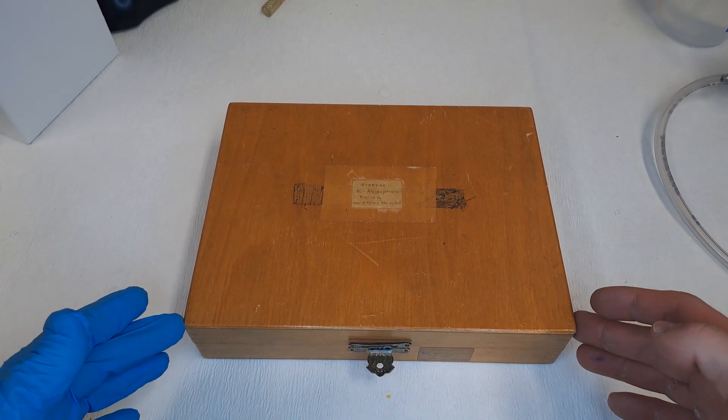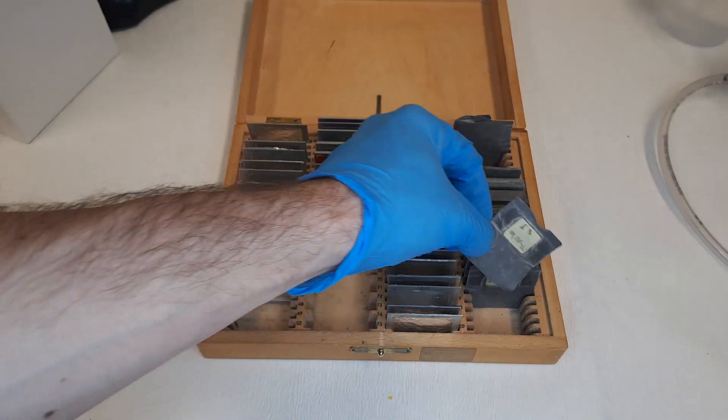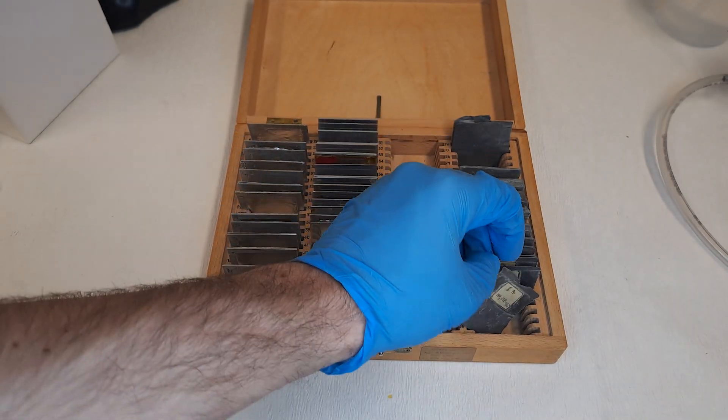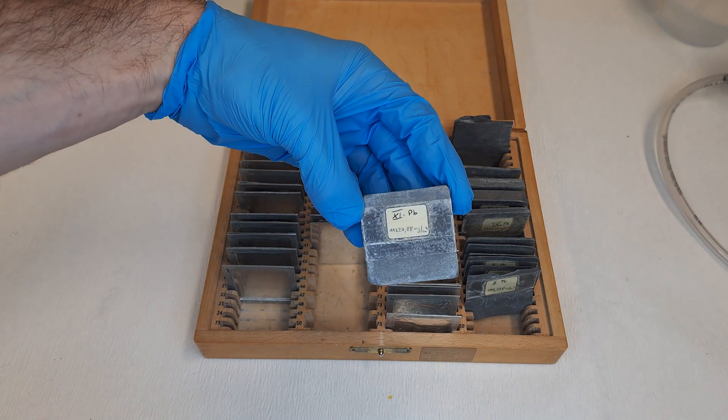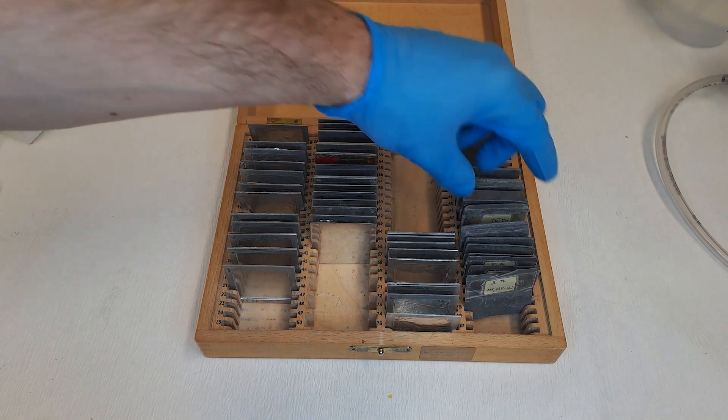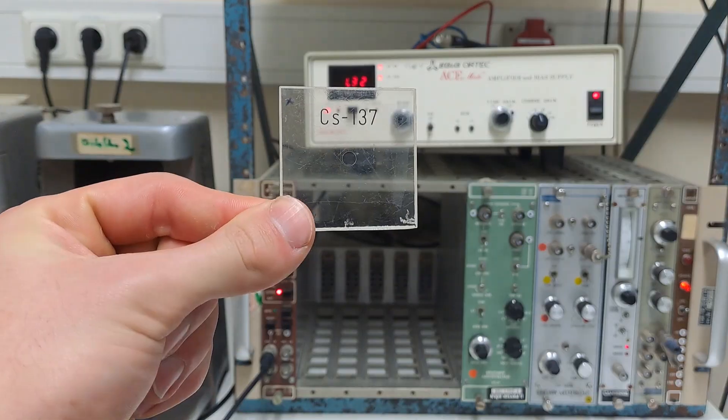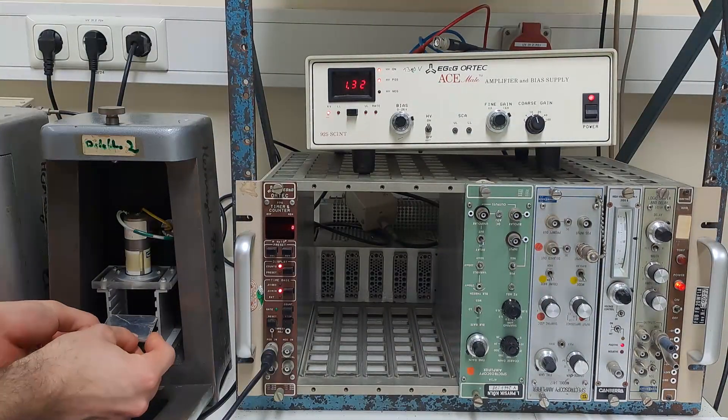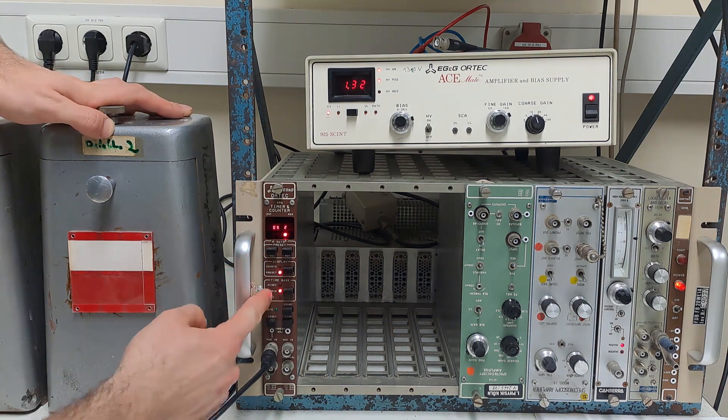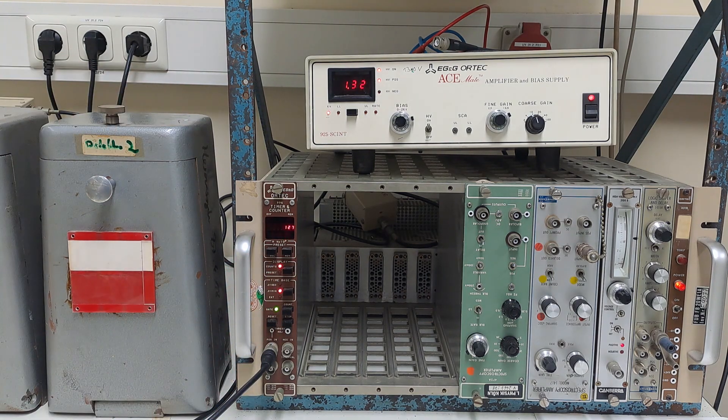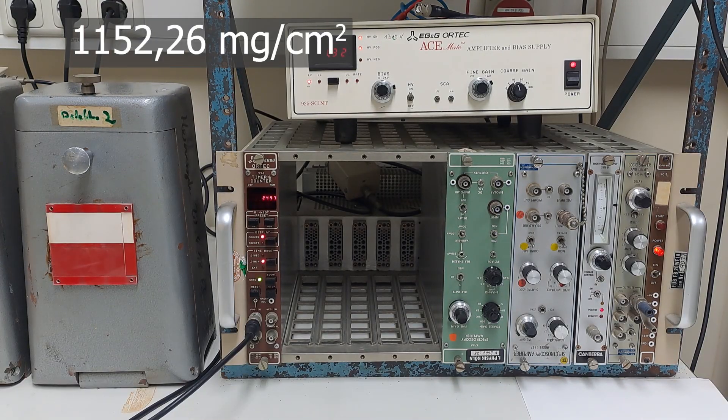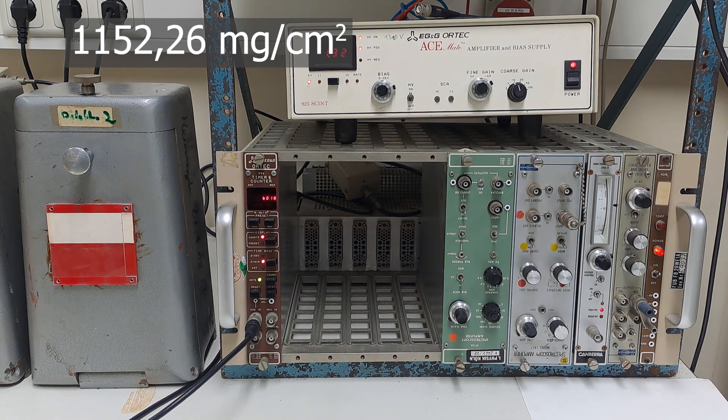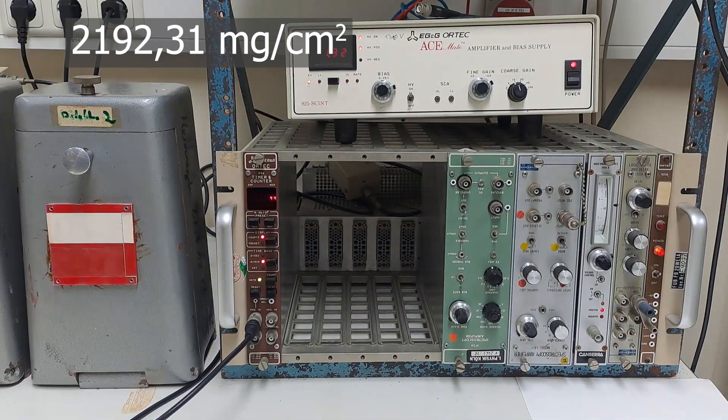In this experiment lead plates of varying thickness are used. This means we will determine the half value layer for lead and we'll need a gamma emitter: Cesium-137. So we'll be determining the half value layer for 661 kiloelectron volt photons in lead. For our experiment, please use this specific cesium sample with this particular aluminum plate. We have another sample but this is unsuitable. The aluminum plate is there to completely shield the beta particles from the cesium so that our sample is effectively a pure gamma emitter.